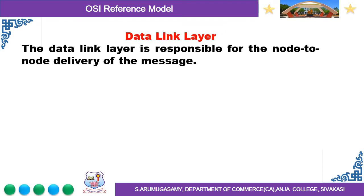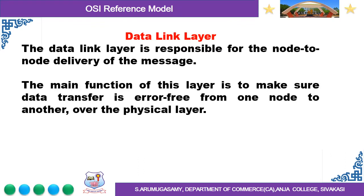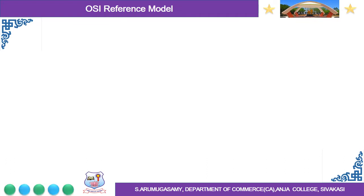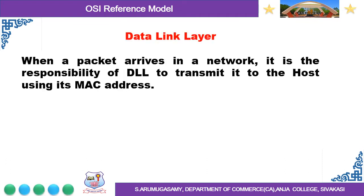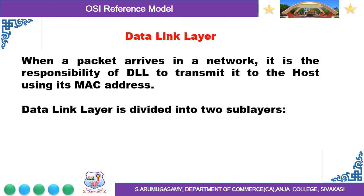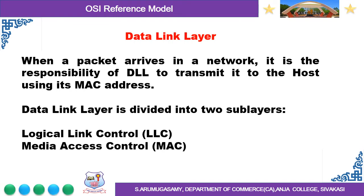Data Link Layer: The Data Link Layer is responsible for the node-to-node delivery of the message. The main function of this layer is to make sure data transfer is error-free from one node to another over the physical layer. When a packet arrives in a network, it is the responsibility of the Data Link Layer to transmit it to the host using its MAC address. The Data Link Layer is divided into two sublayers: the first one is Logical Link Control, and the second one is Media Access Control.